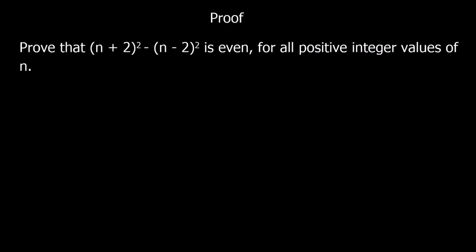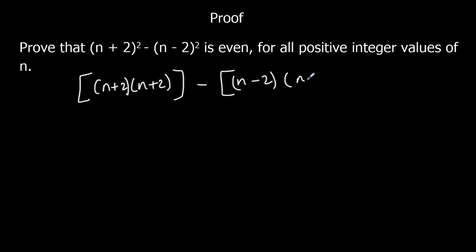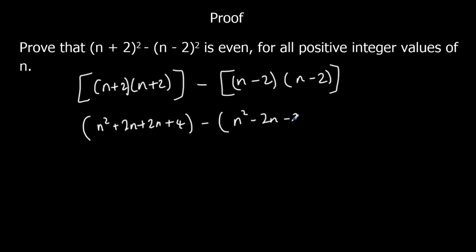Here's another example of the same sort of thing. It says: prove that (n+2)² minus (n-2)² is even for all positive integer values of n. So we're going to do the same thing again — we're going to expand the two brackets first. So we've got n squared plus 2n plus 2n plus 4, and we've got n squared minus 2n minus 2n plus 4. So that's n squared plus 4n plus 4, take away n squared minus 4n plus 4.